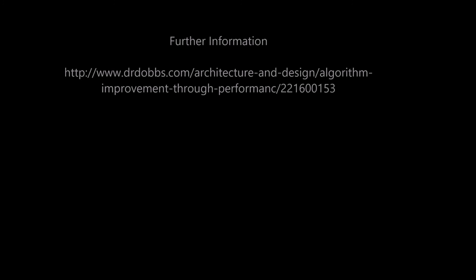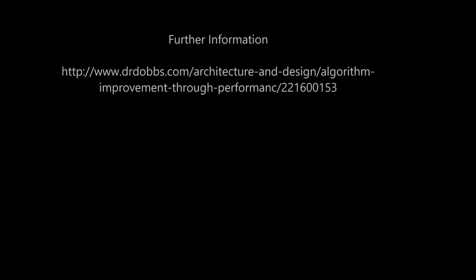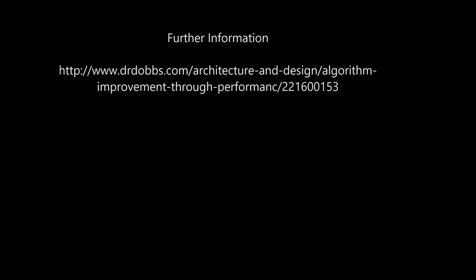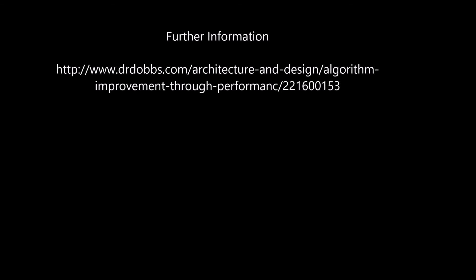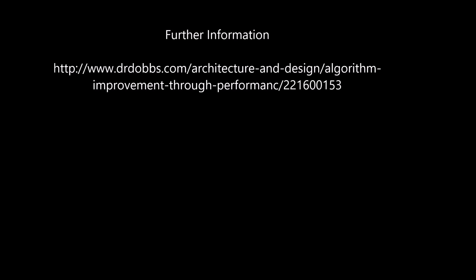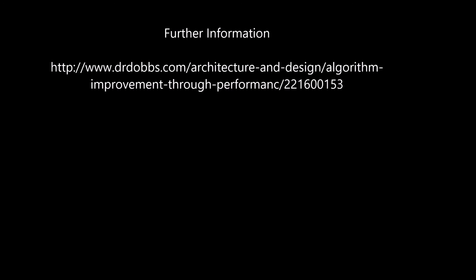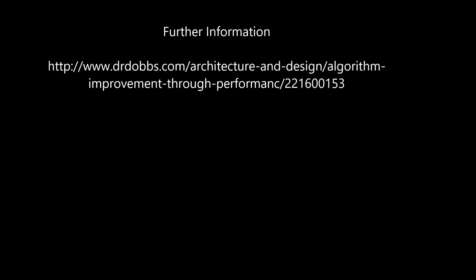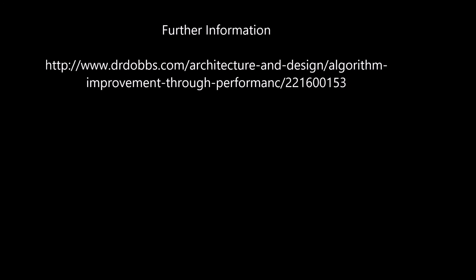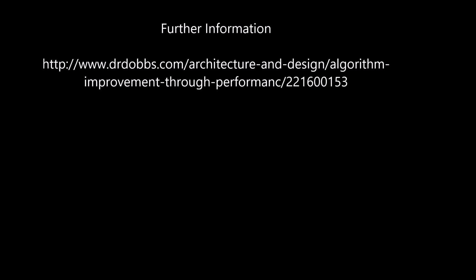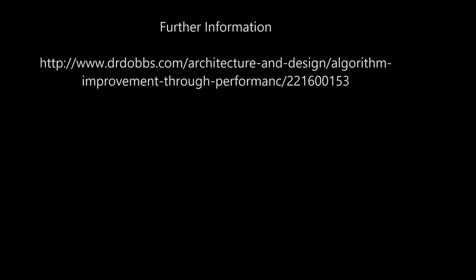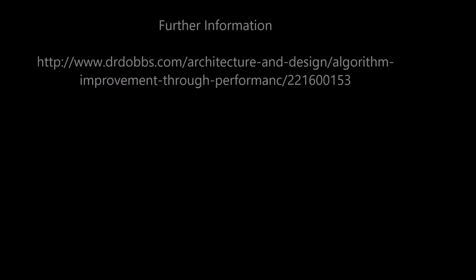Radix sort used three passes because each of the numbers had three digits. If numbers had more digits, radix sort would use as many passes as there are digits. This video introduced the core concepts used by radix sort starting from the most significant digit on the left. A deeper dive into the details of radix sort is in a separate video tutorial. Radix sort can also start from the least significant digit on the right.